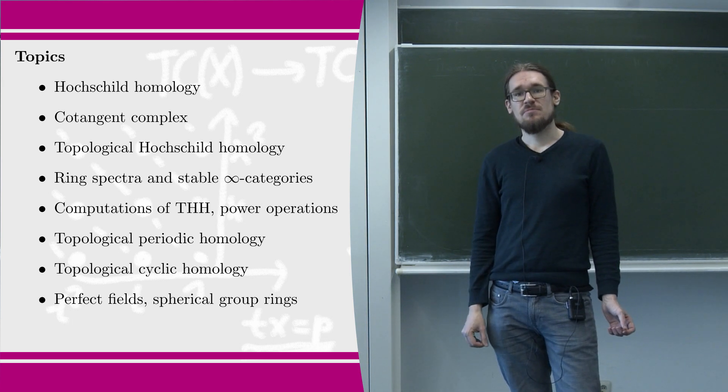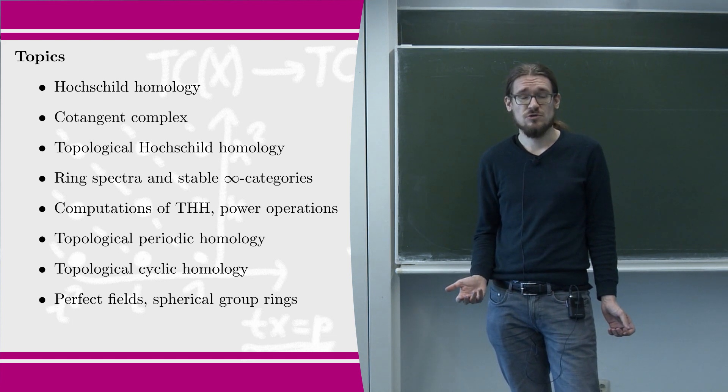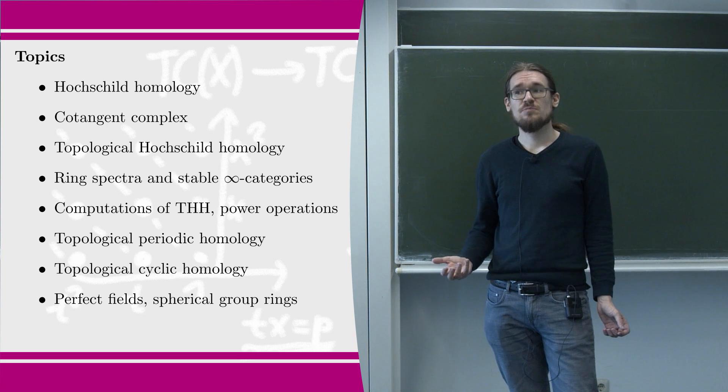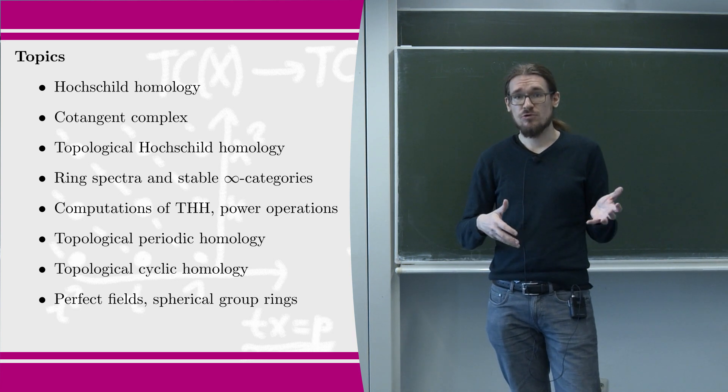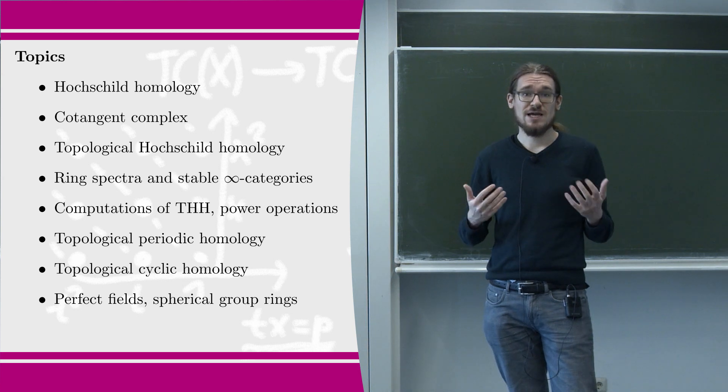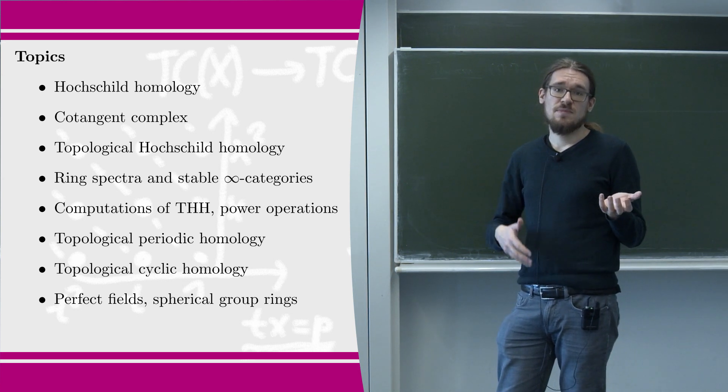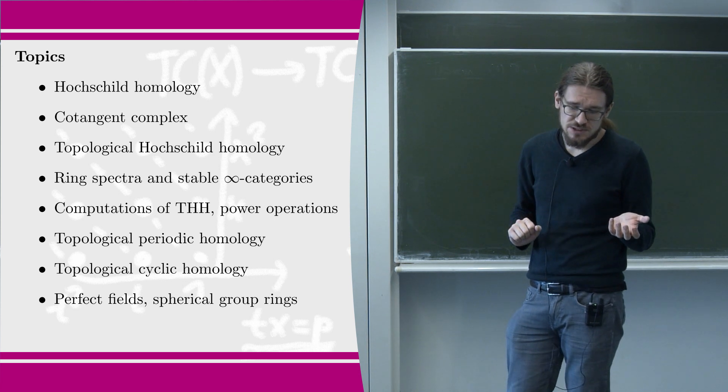Topological cyclic homology is based on a version of Hochschild homology called topological Hochschild homology, which isn't built from ordinary rings through ordinary homological algebra but instead through so-called higher algebra, which deals with ring spectra and stable infinity categories.